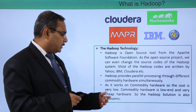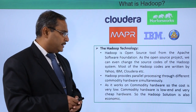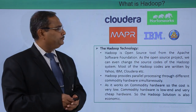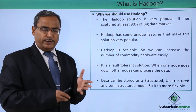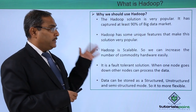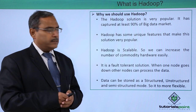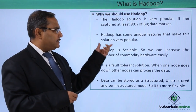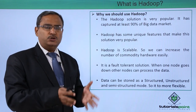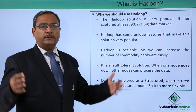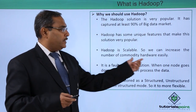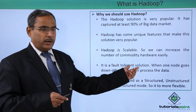As Hadoop works on commodity hardware, the cost is very low. Commodity hardware is low-end and very cheap hardware, so the Hadoop solution is also economic and cheap. Why should we use Hadoop? It is a very important and common question. The Hadoop solution is very popular and has captured at least 90 percent of the big data market. Hadoop has unique features that make it very popular — it is scalable for load sharing, and we can keep adding commodity servers, making it easily scalable. It is also a fault tolerant solution.